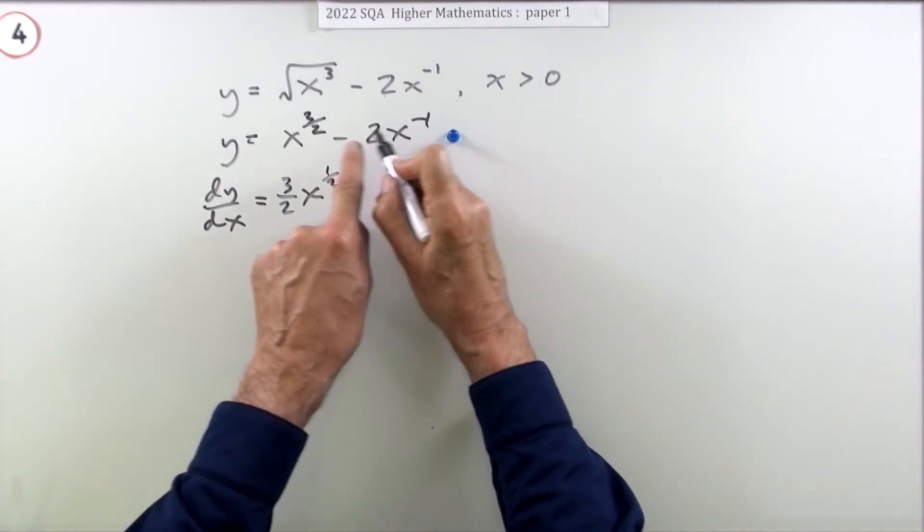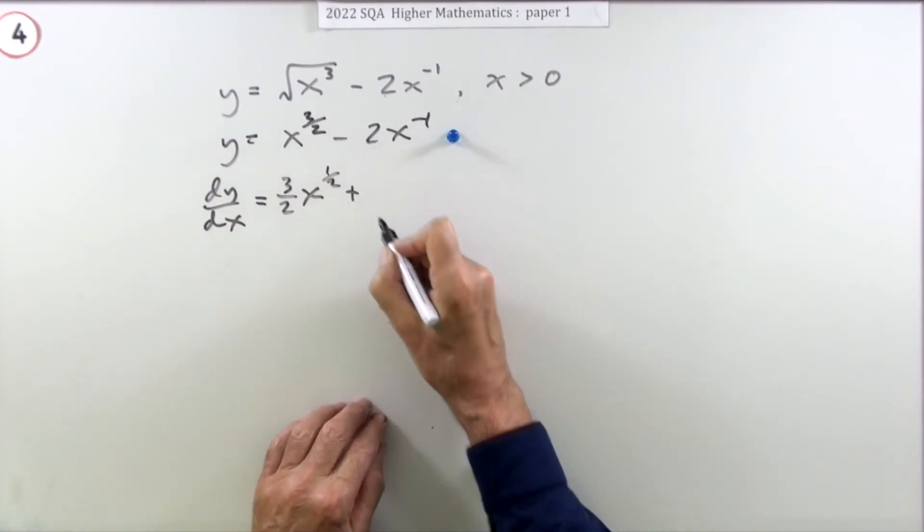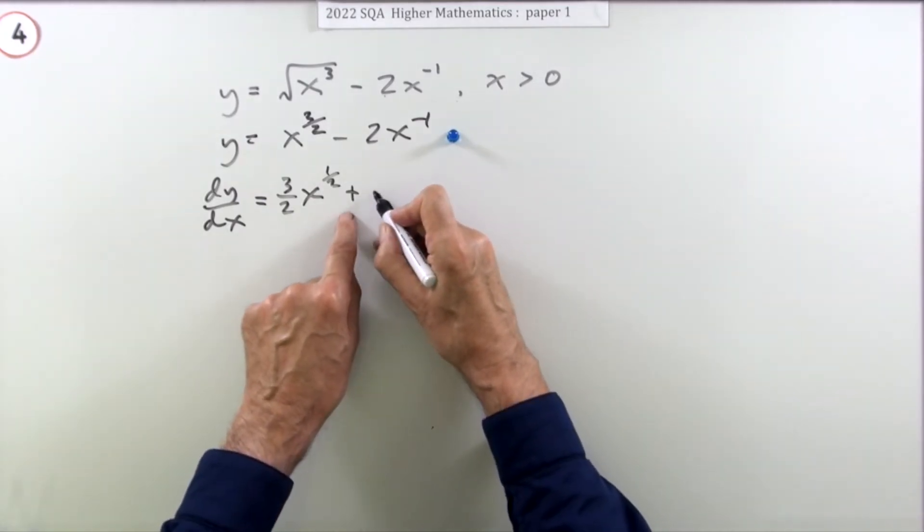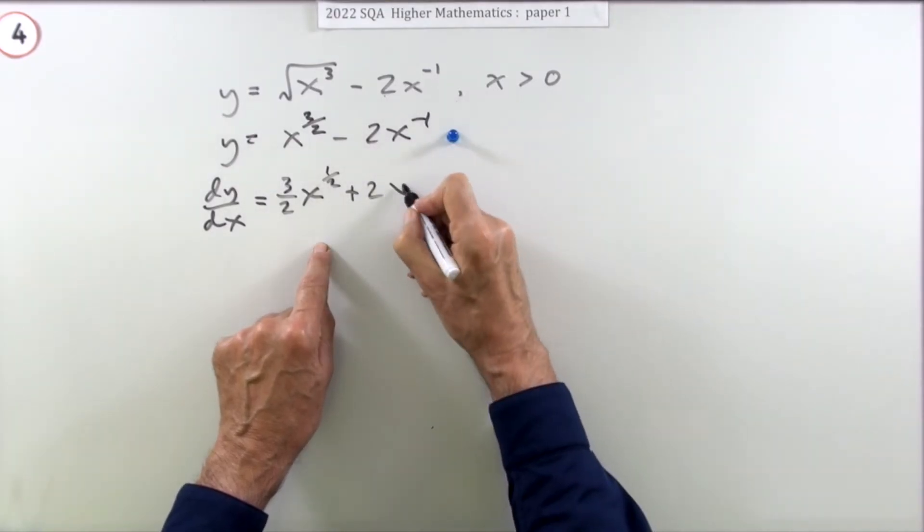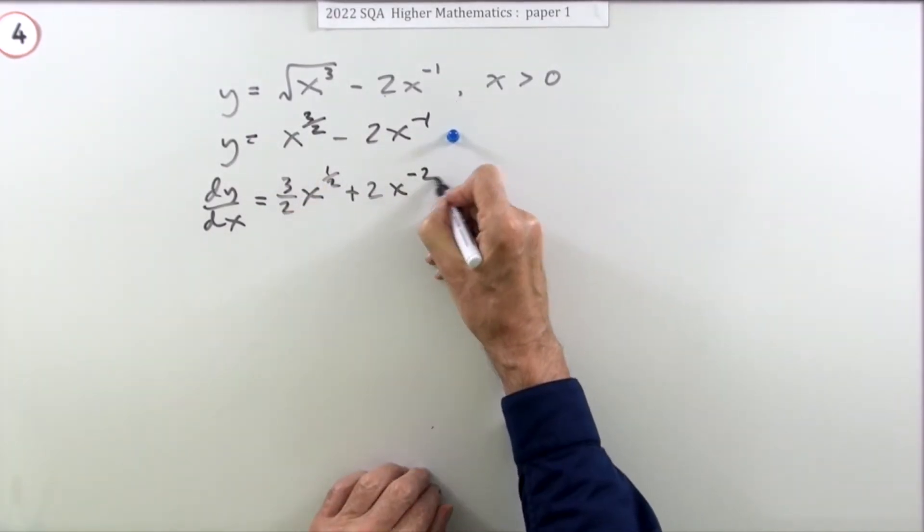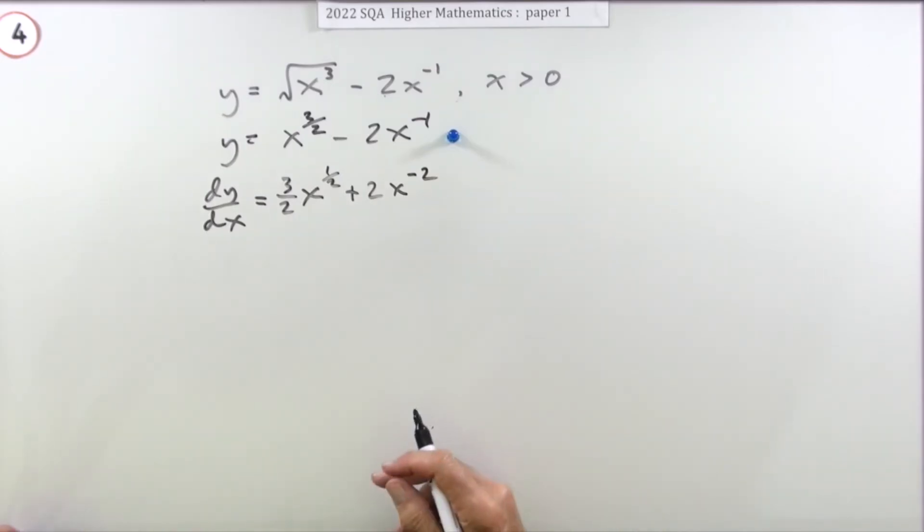Next one. Multiply by the power. Rather than rewrite it as negative 2 times negative 1, I'm just going to say plus straight away. 1, 2's are 2. Take 1 off the power. Negative 2. And that's it done.